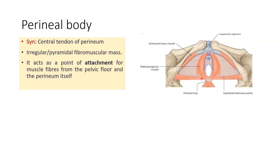The superficial transversus perineal muscles are at the base of this triangular area. The bulbospongiosus muscles and the superficial transversus perineal muscles are joining here, and this is the area of the perineal body which gives attachment to the muscles of the pelvic floor and perineum.